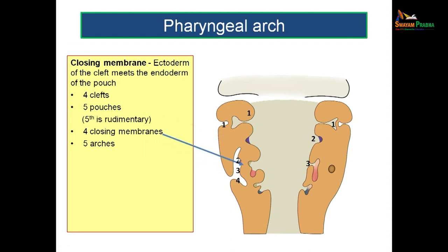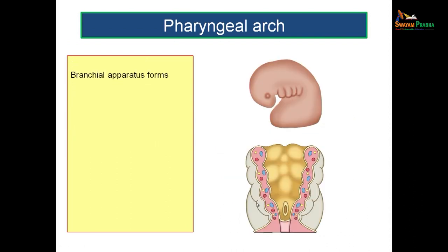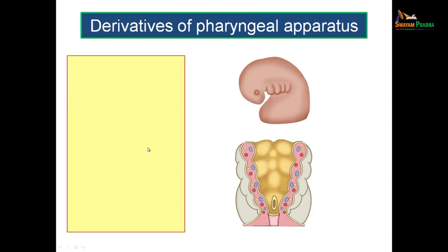So the branchial apparatus forms. What are the parts derived from it in a nutshell? You have the face, the neck, the definitive mouth, the pharynx, and the larynx — all these are actually derived from the branchial apparatus. Now it is time to know the derivatives of each part. We have the clefts, the pouches, and the mesodermal cores. First let us see what are the derivatives of mesoderm, derivatives of ectoderm, and derivatives of endoderm.